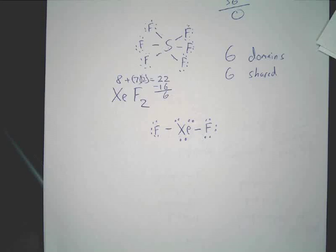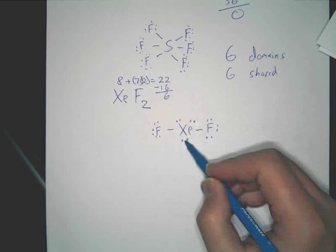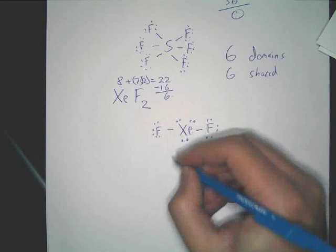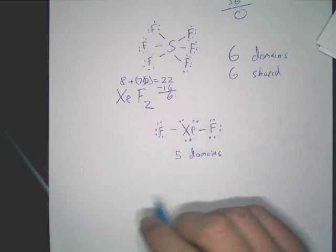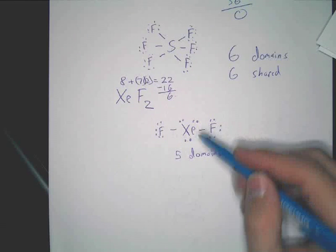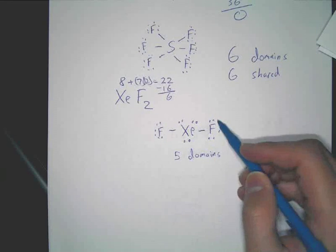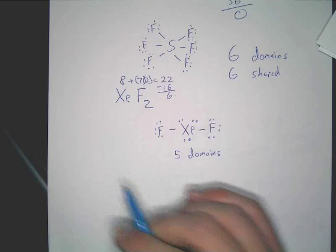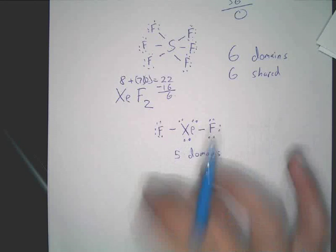Student: Wait, so is that three unshared? Teacher: Yeah. Now, if you look here, how many domains are on the central atom? Five. One, two, three, four, five domains. Yep. Now, the key here, by the way, is that something I forgot to say, is that the central atom is the only thing that can violate the octet rule. The outer atoms will not. So fluorine, you couldn't do a double bond as well there because it can never have more than eight electrons in this case.